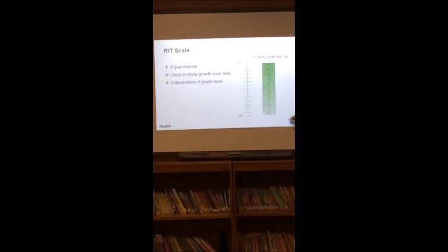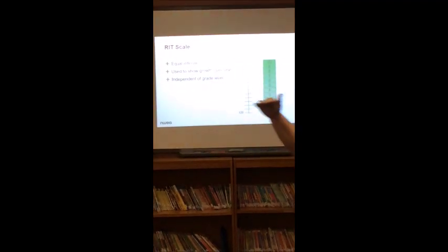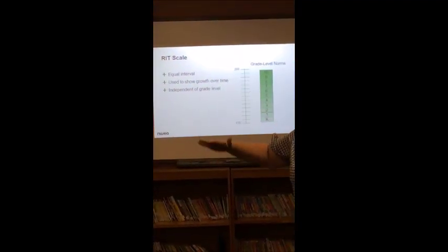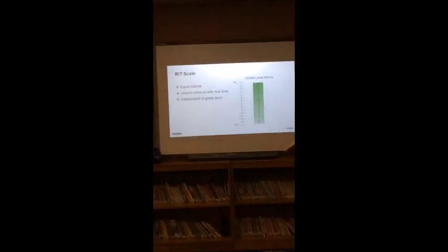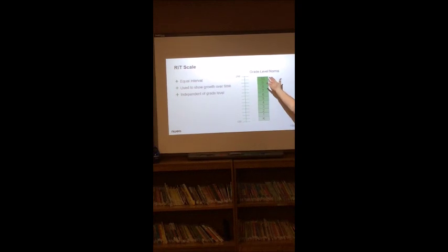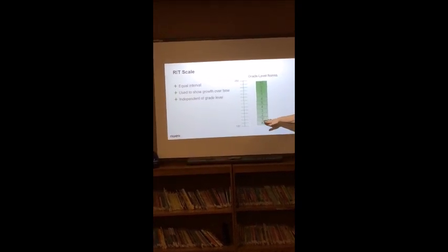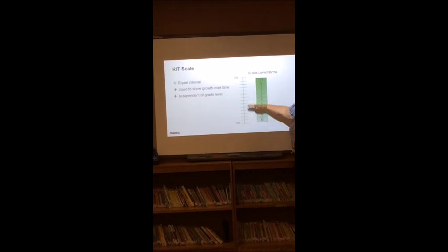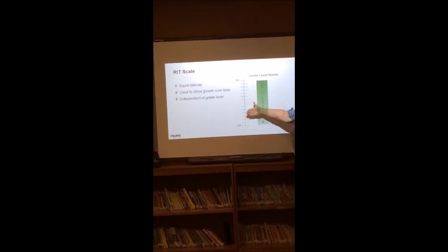So again, when we're measuring our children as they grow and we measure them on the wall, we can see over time how tall they're getting. Think of the same way as their growth assessment. So we are measuring where they are in kindergarten and first grade and as they grow, we're going to continue to measure that growth over time. And that's what that RIT score does.